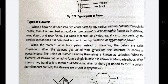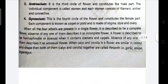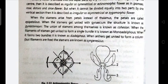When stamens arise from petals instead of from the thalamus, they are called epipetalous. So if the stamens arise from the petals and not from the thalamus, we call them epipetalous.